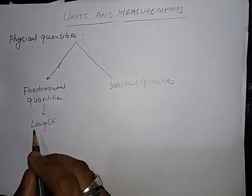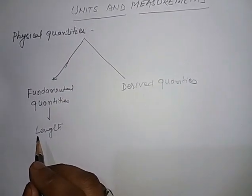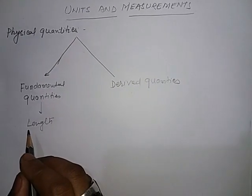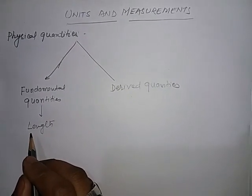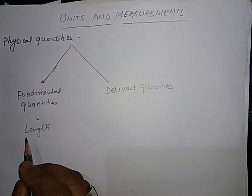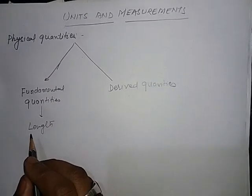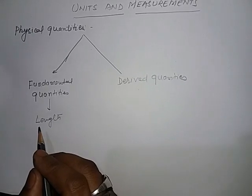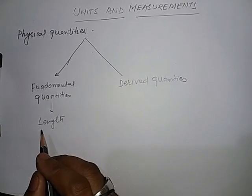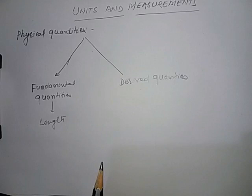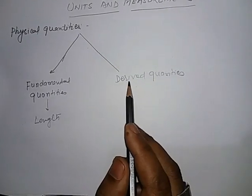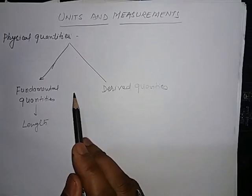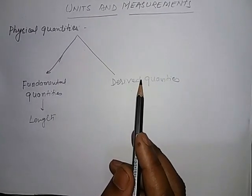All these seven physical quantities do not depend on other quantities for their measurement. What are derived quantities? Physical quantities whose defining operations are based on other physical quantities are called derived quantities. Derived quantity means its measurement depends on fundamental quantities or other quantities. For example,